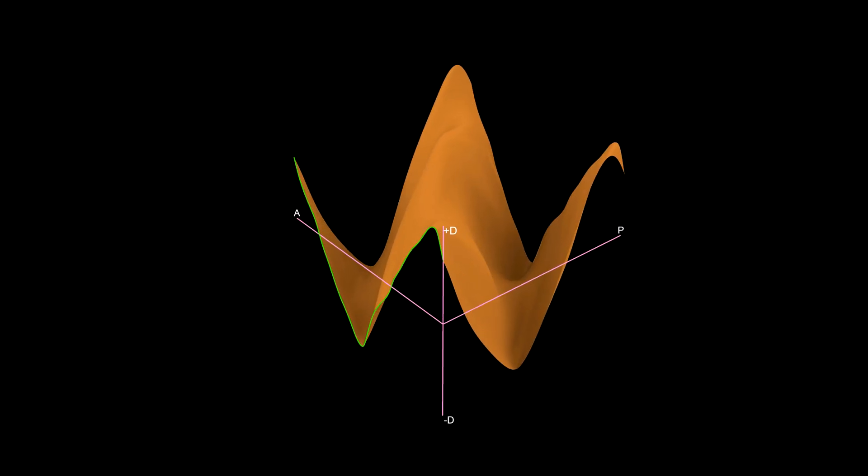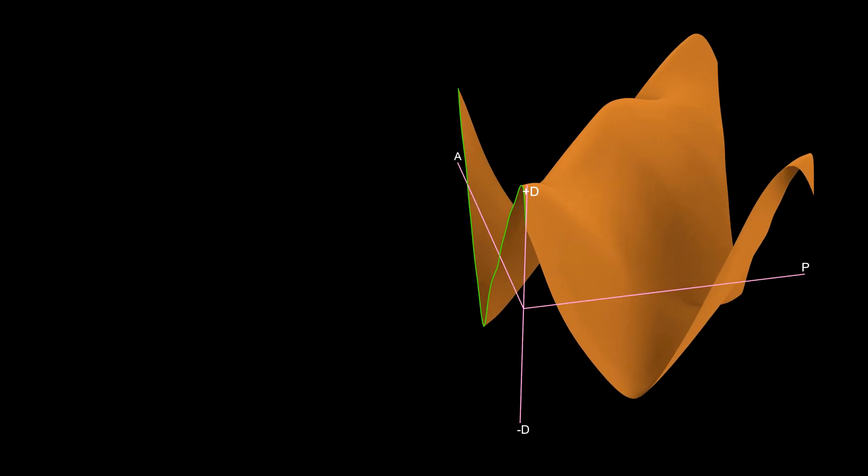Every point on this surface represents every line connecting any combination of any two points on the original curve. Think about it for a moment.